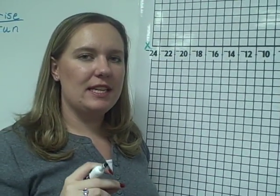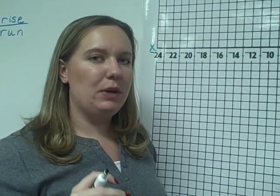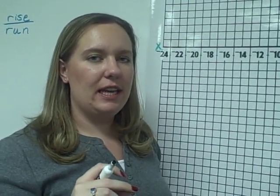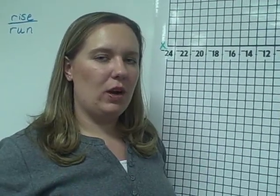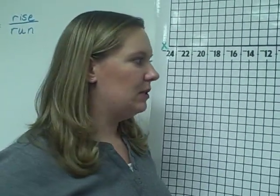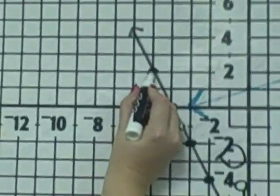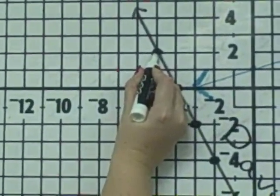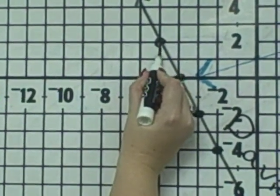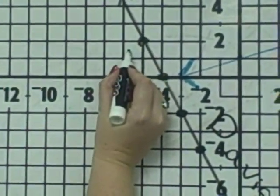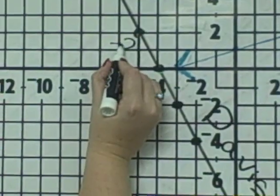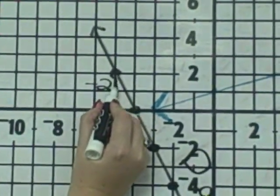First, we're going to count from point to point how many we rise, and then we're going to count how many we run. That's all we're doing is counting. So if we start at the top, we're going to rise, but we're going to rise down two. So we're going down two, which would be a negative two. Down two.